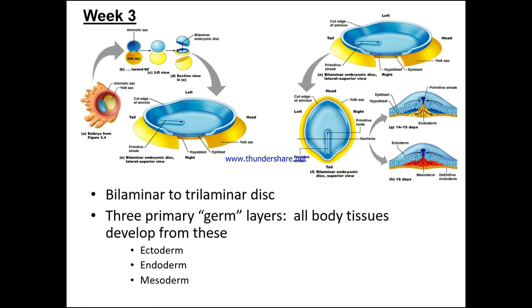In week three, we go from the bilaminar to the trilaminar disc. There are three primary germ layers, and all body tissues develop from these. These are the ectoderm, the endoderm, and the mesoderm. We're going to look at these in simplified ways to have an understanding of what they do, where they go, and what they form in the body.